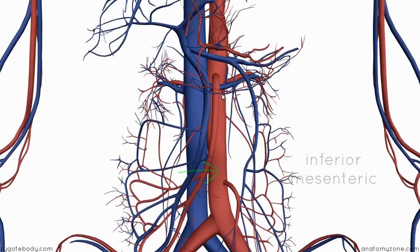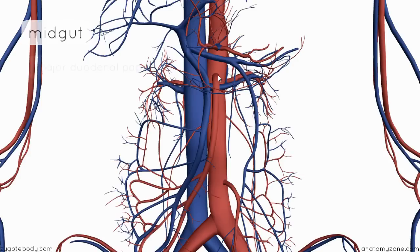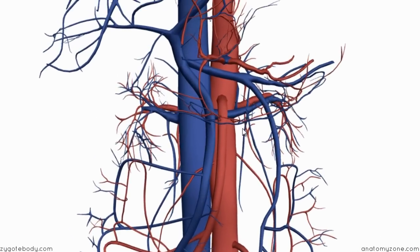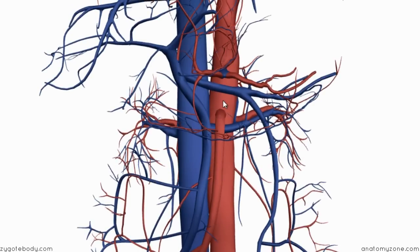I'll talk a little bit about the relations of the superior mesenteric artery and then I'll talk about the branches. The superior mesenteric artery supplies the midgut. The midgut is the section of the intestine which runs from just below the major duodenal papilla to two-thirds of the way across the transverse colon. The celiac artery lies at the level of the upper border of L1 lumbar vertebra, and the superior mesenteric artery lies at the lower border of L1 lumbar vertebra.